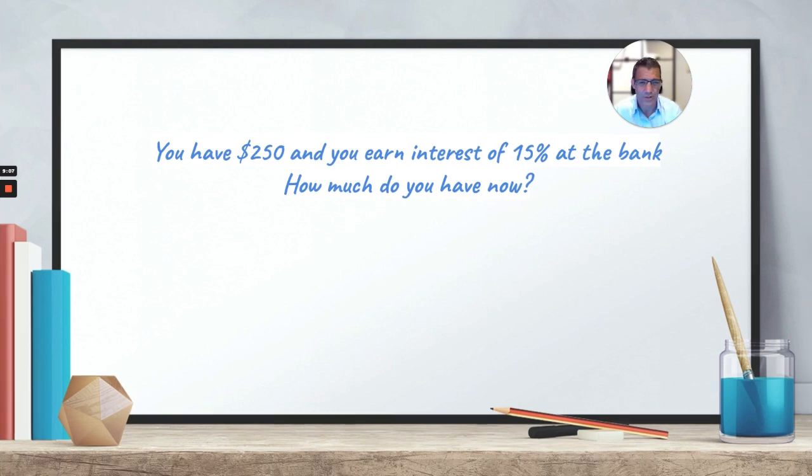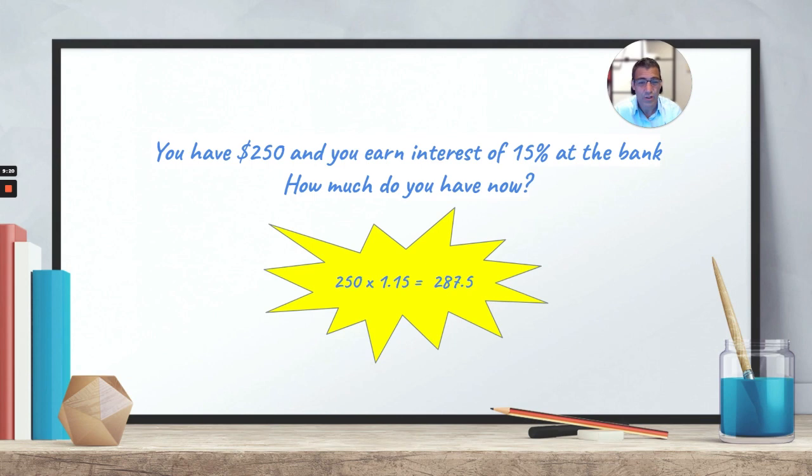All right, I know this one's a little bit difficult. But if you realize that it was 1.15 for your multiplier, you did really good. And so 250 times 1.15 is equal to, let's see here, 287.5. So if you got that result, that's excellent. Well done.